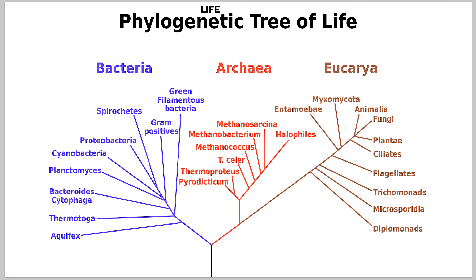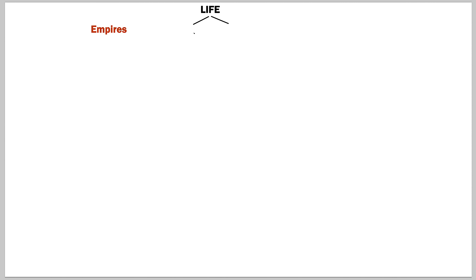Now we divide life into two categories — the first category under life is called the 'empire' category, also known as 'domains.' Don't be confused if you see this referred to as domains; they're the same thing. In this video we'll be referring to them as empires.